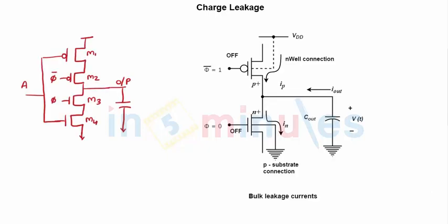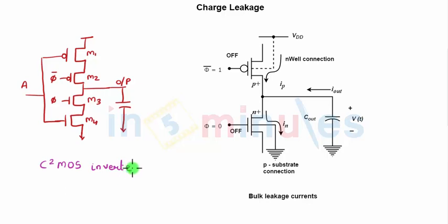Welcome to 'In 5 Minutes.' The agenda of this clip is to understand the problem of charge leakage. We will understand this with a C² MOS circuit. Here on the screen I have drawn a C² MOS inverter. C² MOS is nothing but clock CMOS inverter, and we have seen its working in the previous clip.